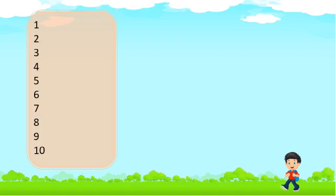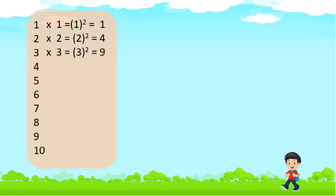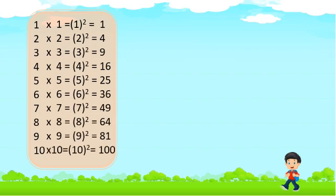Let's take the first 10 natural numbers: 1, 2, 3, 4, 5, 6, 7, 8, 9, and 10. Now let's multiply each by itself. Multiply 1 by 1, we get 1; multiply 2 by 2, we get 4; multiply 3 by 3, we get 9; multiply 4 by 4, we get 16; multiply 5 by 5, we get 25, and so on. These products — 1, 4, 9, 16, 25, 36, and so on — are called squares.